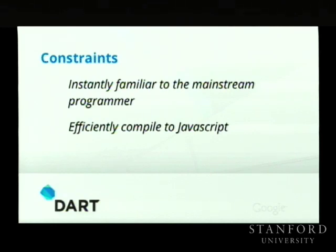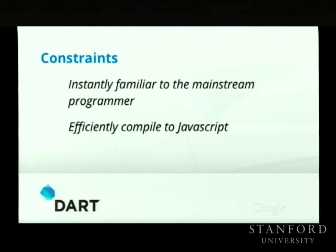There are two really tough constraints on this design. One is that there are a lot of people programming on the web — they're not necessarily all Stanford graduates or Google employees — and we want something essentially familiar to them, because we're interested in adoption. I've been involved in languages that got broad adoption, and also in languages that were actually a lot more fun and got no adoption. We want this to be unsurprising to the mainstream programmer. We also have a constraint that this thing has to compile efficiently to JavaScript.